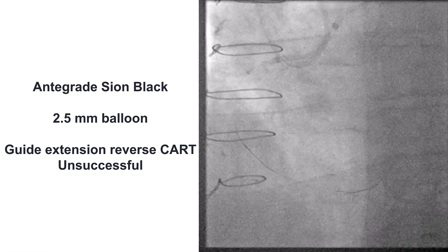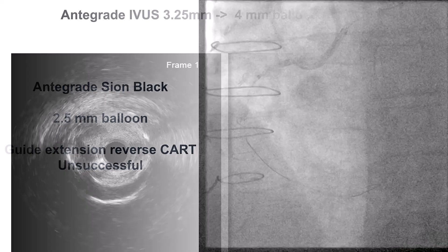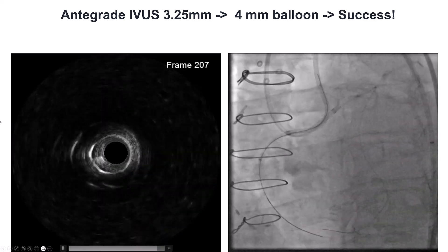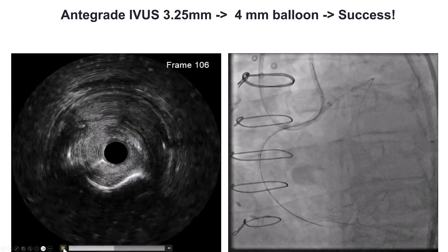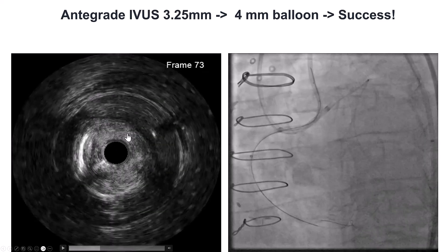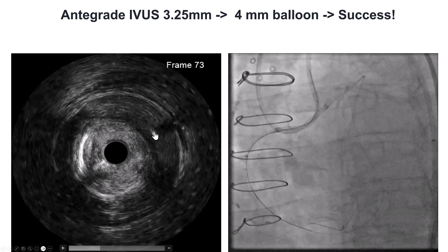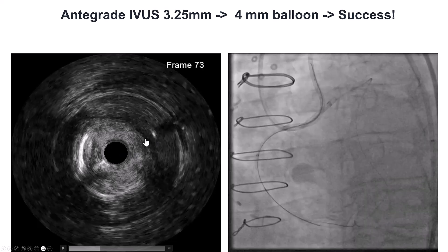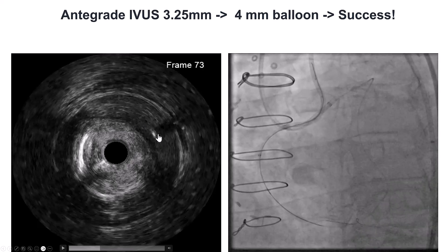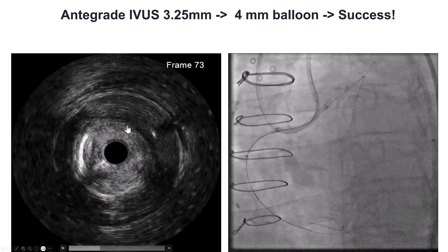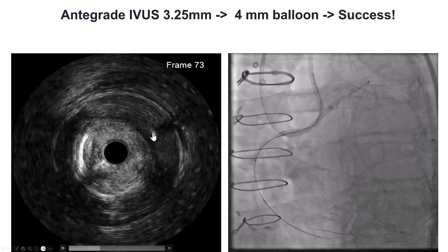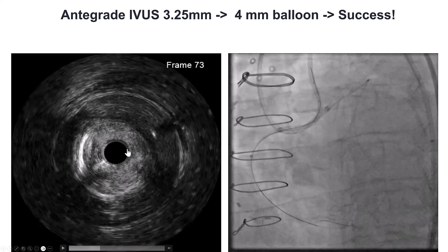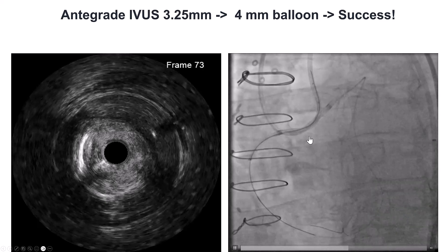We then tried to do guide extension reverse CART, and we had a lot of difficulty. When there is difficulty in reverse CART, one of the ways to figure it out is to do intravascular ultrasound. What we're seeing on the IVUS is that the antegrade wire is in the true lumen, whereas the retrograde wire is in the false lumen. This is one of four scenarios: both in the true lumen, both in the false lumen, or one each. The solution for this particular scenario — antegrade true and retrograde false — is to create dissections over the antegrade wire to allow connection of the two spaces. To do this, we used a bigger balloon, three to five and then four millimeters, and eventually we were successful in crossing into the antegrade guide catheter.